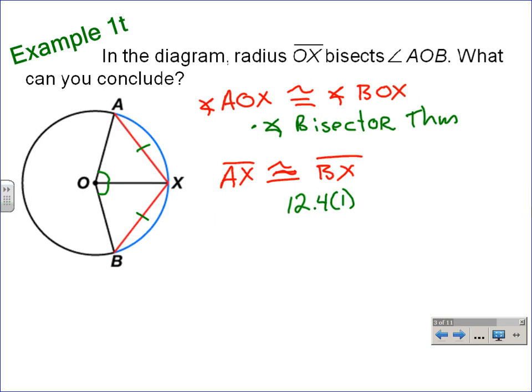And then, from that, we can conclude that arc AX is congruent to arc BX, and that's because of theorem 12.4 part two.